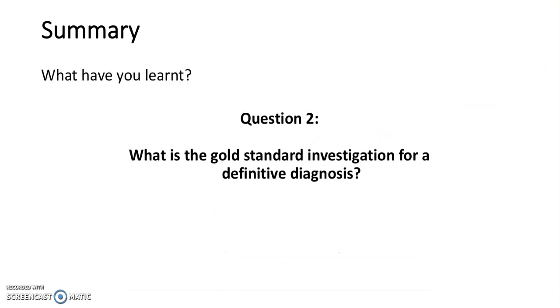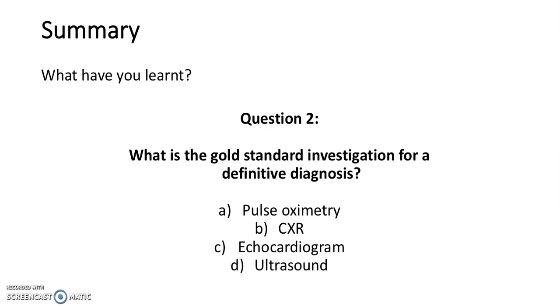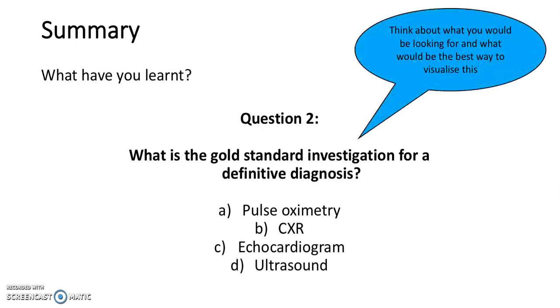Question 2: What is the gold standard investigation for a definitive diagnosis? Is it A, pulse oximetry; B, chest x-ray; C, echocardiogram; or D, ultrasound? The answer is echocardiogram.